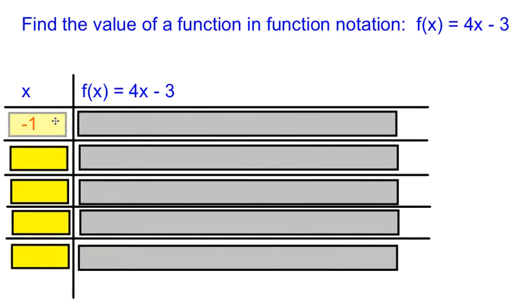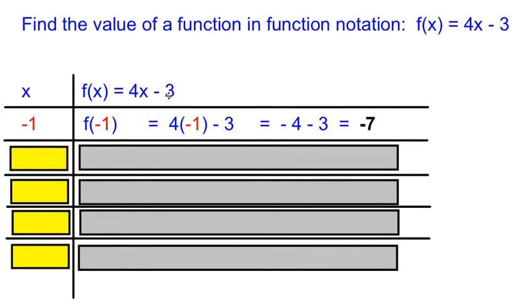My first x value that I'm going to use is negative 1. In function notation, the expression within the parentheses represents your x value. So right away I'm going to replace the x with a negative 1. Now the rest of my equation says 4x minus 3. Anywhere that I see the variable x, I will simply replace my value for x, which is currently negative 1. So now all I have to solve is 4 times negative 1 minus 3. Negative 4 minus 3 is equal to negative 7. So when I'm trying to find f of negative 1, my value is negative 7.